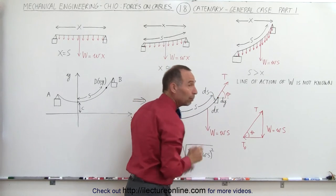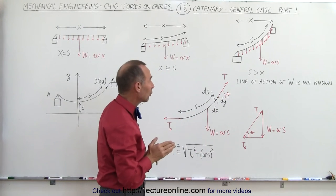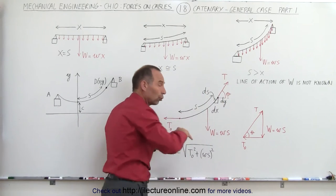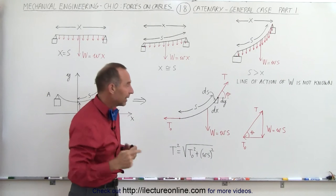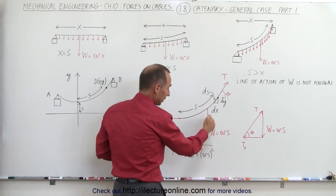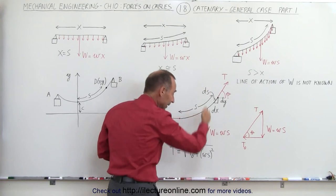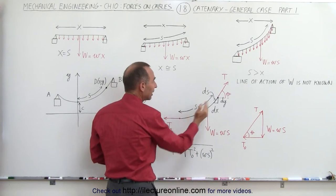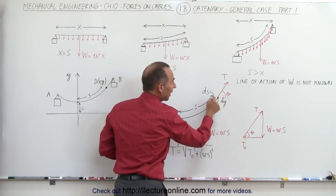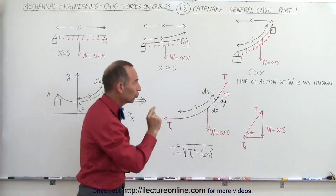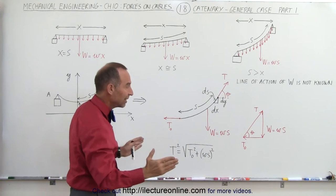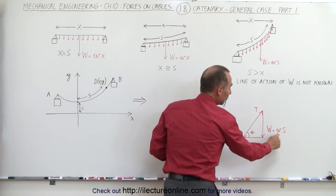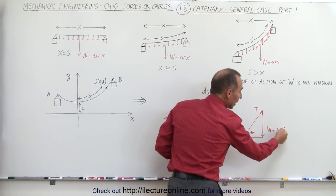The tension T at the end of the cable section points in the direction the cable points at that location — some angle θ. There are only three forces acting on the cable section: W (the total weight, acting downward due to gravity), T₀ (acting horizontally), and T (at the angle found at the end nearest the support). If you sum these vectorially, this is what they look like.